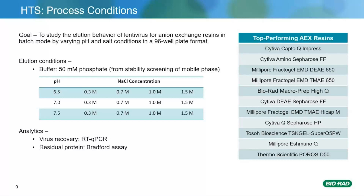The process condition screening was carried out in 96-well plates with the enlisted chromatographic adsorbents which showed promising lentiviral vector recovery from the broad screen. The elution conditions were evaluated by varying the pH and salt concentrations. The pH was evaluated at three conditions: pH 6.5, pH 7, and pH 7.5. The salt concentration was evaluated at four conditions: 0.3 molar, 0.7 molar, 1 molar, and 1.5 molar sodium chloride. The resulting elution fractions were analyzed by RT-qPCR for lentiviral recovery and residual protein impurities were analyzed by Bradford assay.